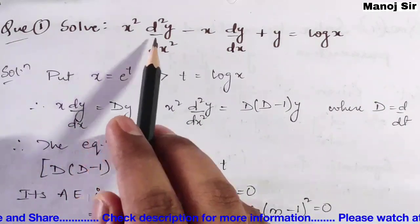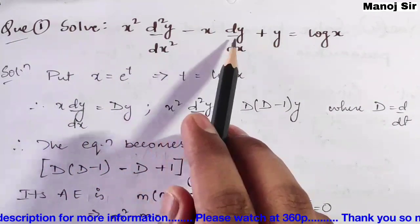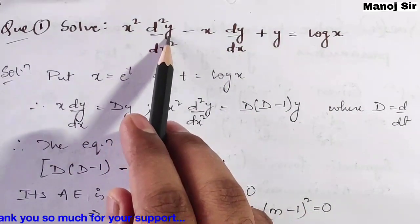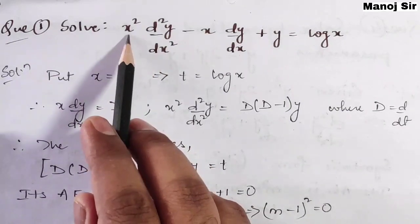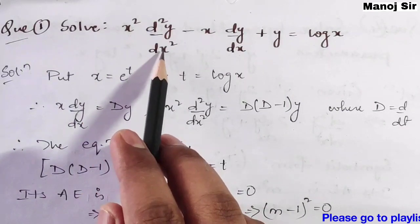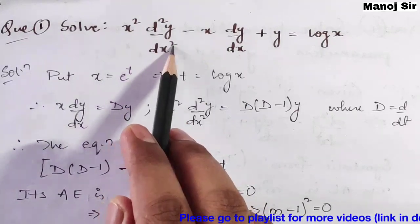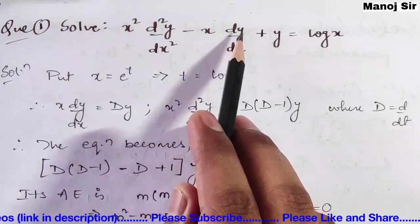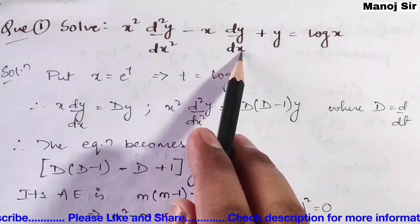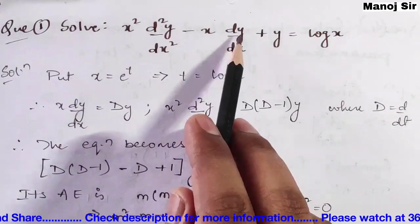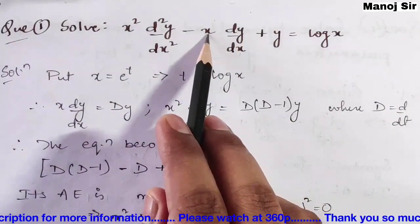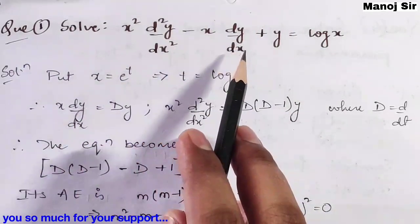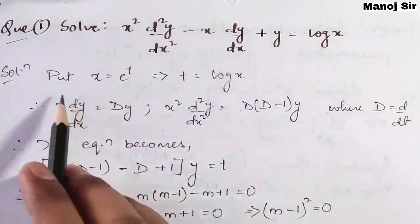Coming to problem number one: we have to solve x squared d²y/dx² minus x dy/dx plus y equals log x. Here y is the dependent variable and x is the independent variable. Notice that the order of the first derivative term is 2 and the power of x is also 2; for the second term the order is 1 and the power of x is 1. So this equation belongs to Cauchy's homogeneous linear equation.